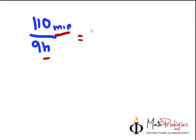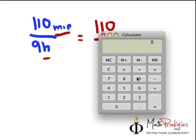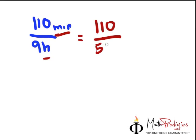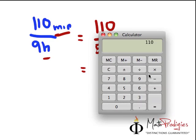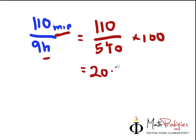So I will still get 110 on top, and the 9 hours is, 1 hour is 60 minutes. So 9 times 60 will give you 540 minutes. And then we multiply it by 100. And then what you will get is, 110 divided by 540, which gives you 0.2037 times 100%, we get 20.37%, which is approximately 20.4.